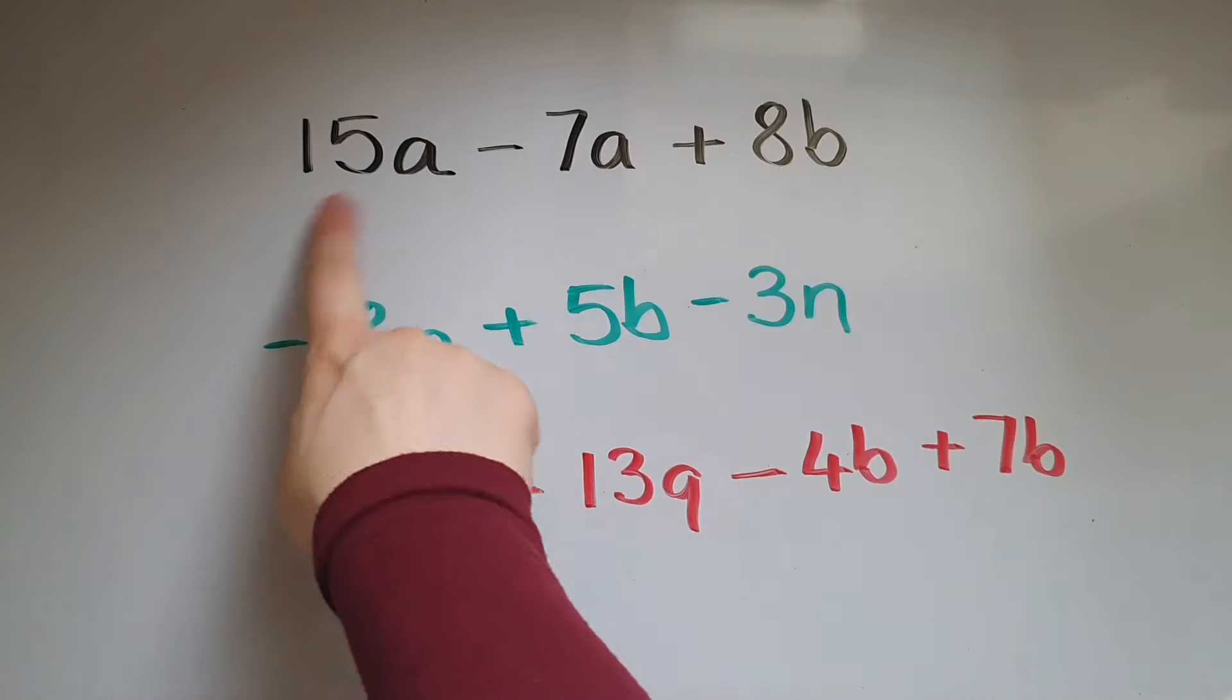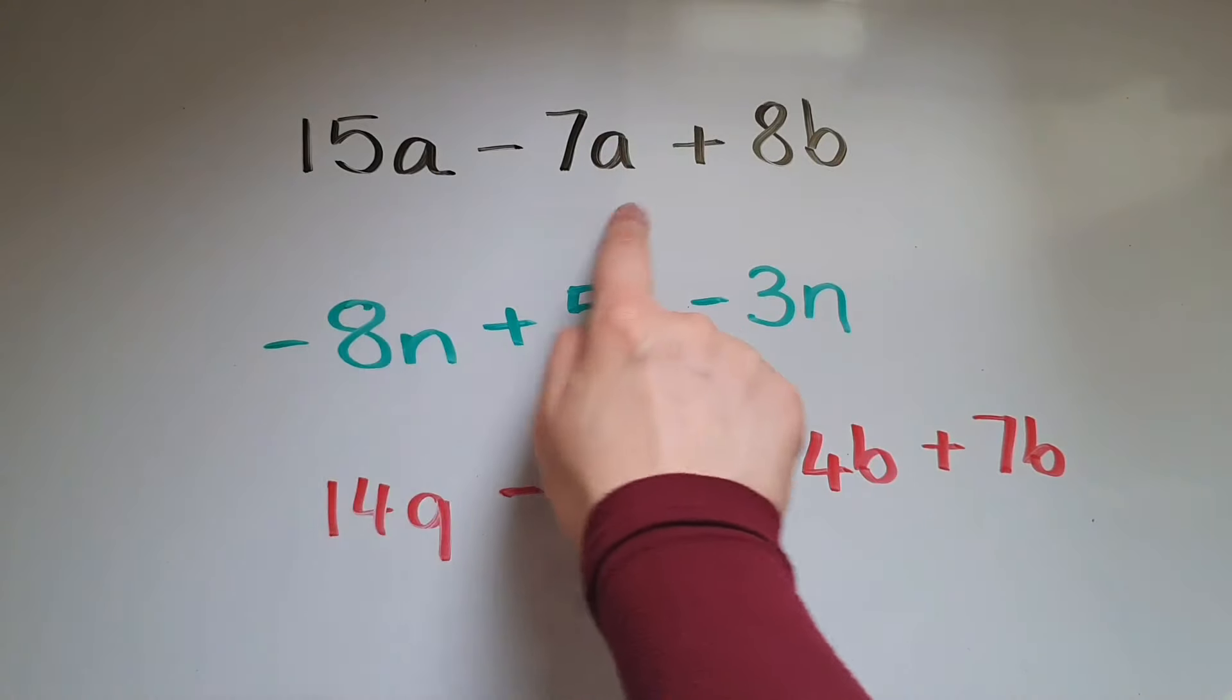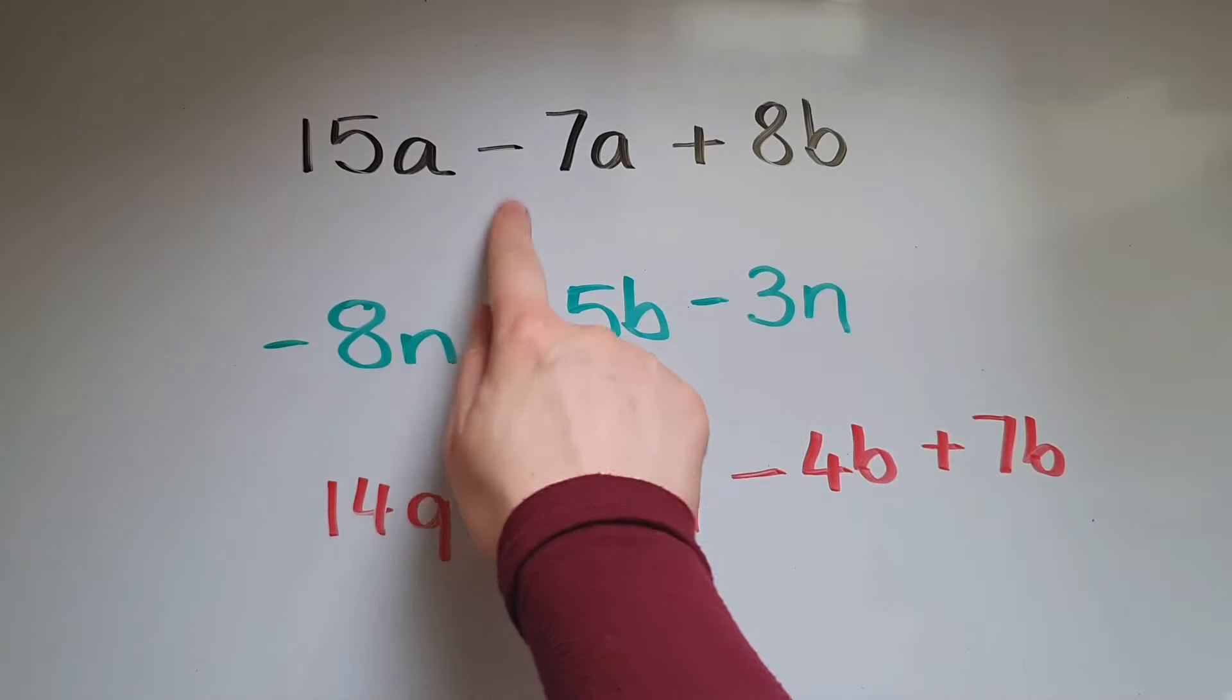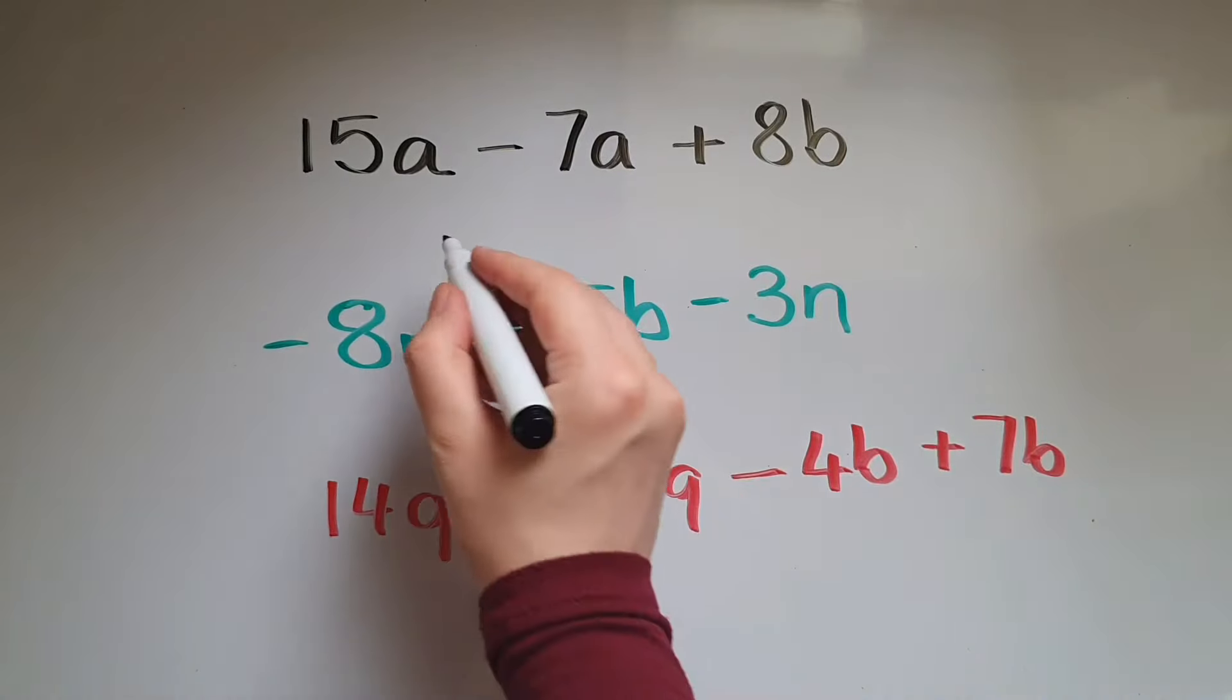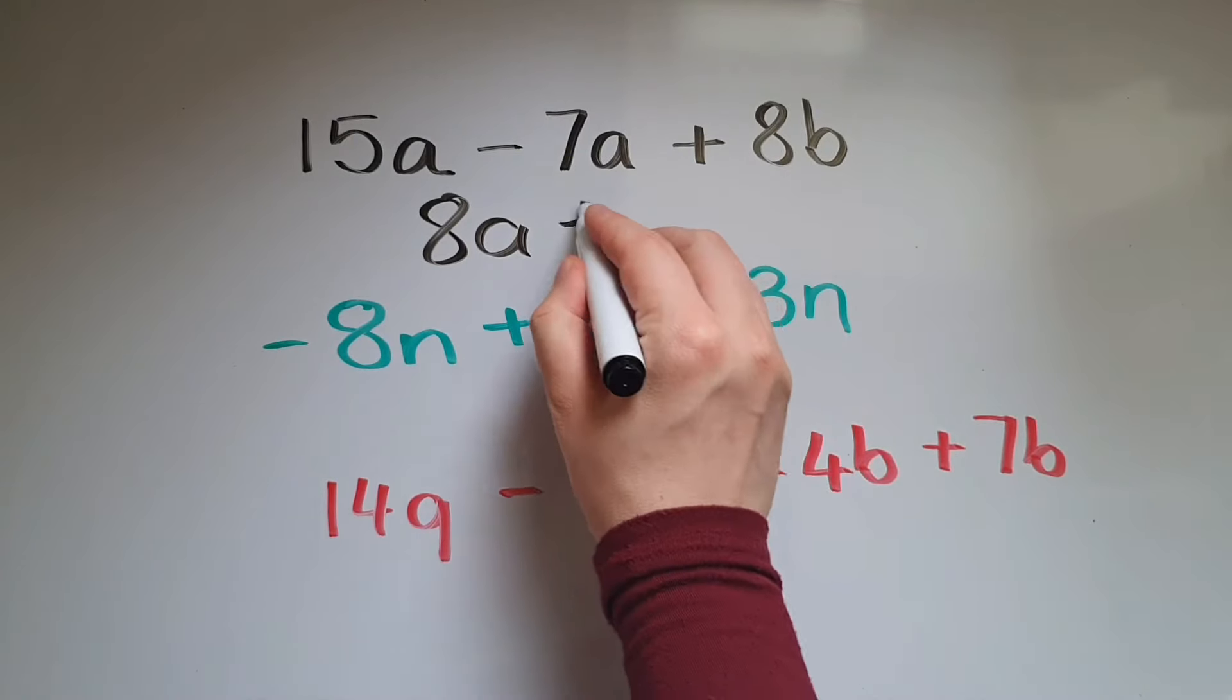So we've got 15 a take away seven a add eight b. Let's collect the a's together. So 15 a take away seven a, that leaves us with eight a, add eight b.